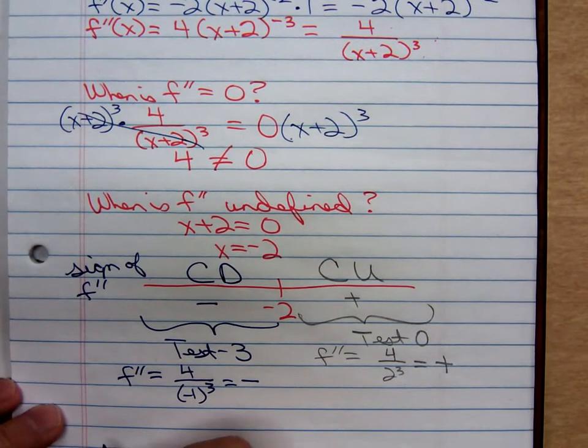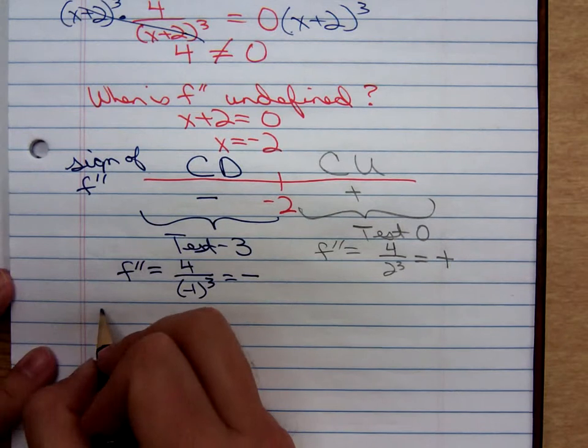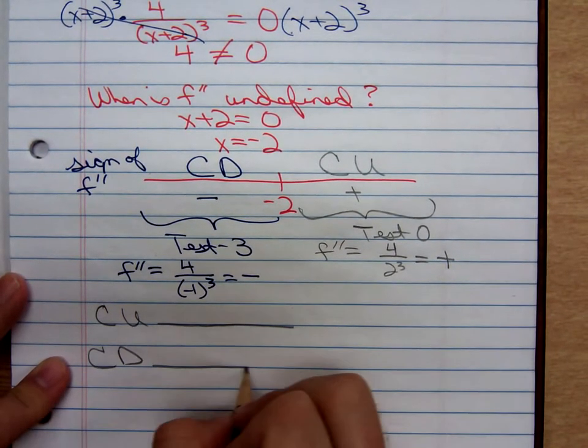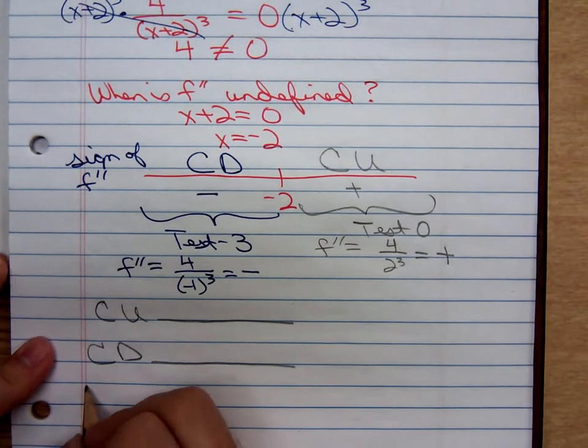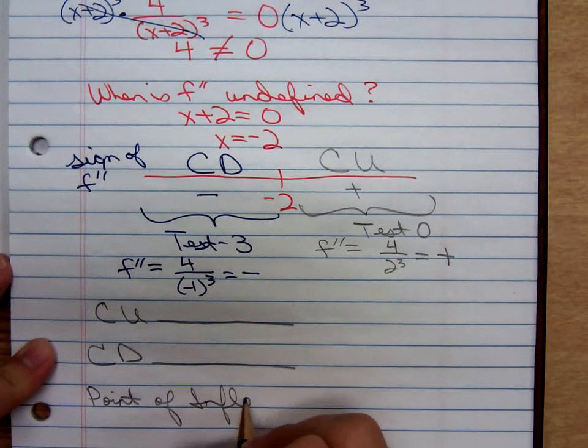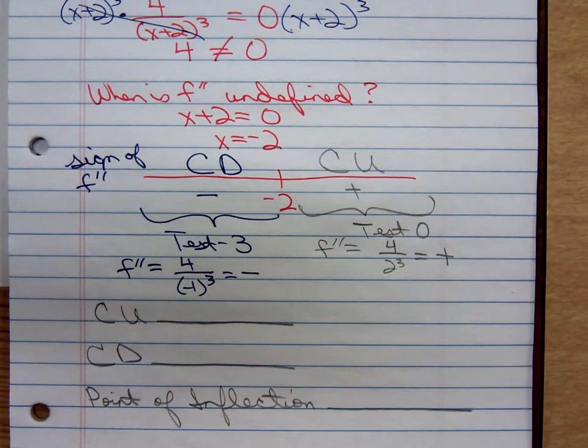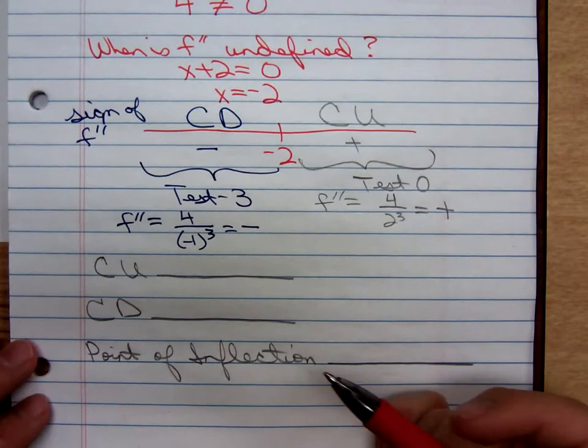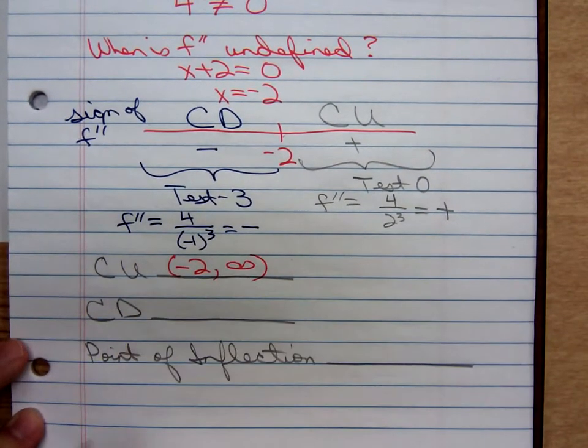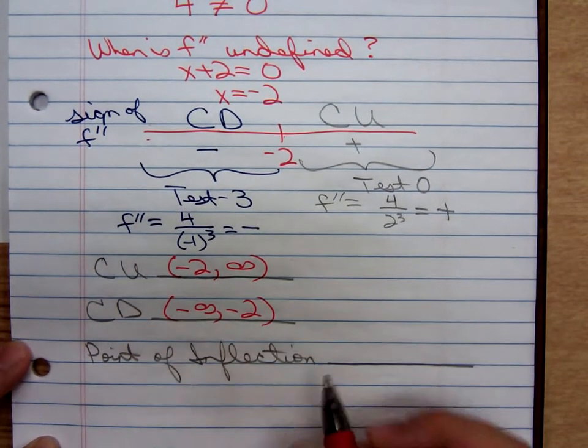And we now can write our answers. They want us to determine when the graph is concave upward, when is it concave downward, and they also ask for any points of inflection. Concave upward would be from negative 2 to infinity. Concave downward, that is negative infinity up to negative 2.